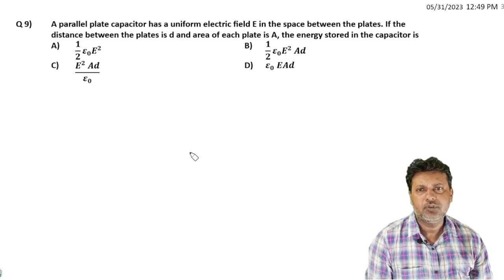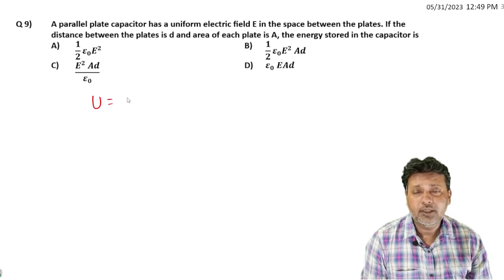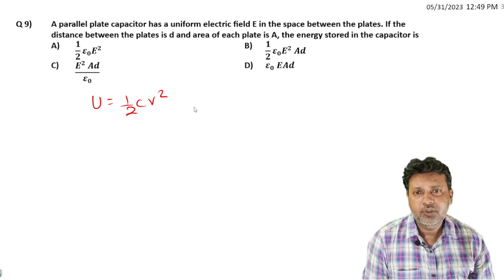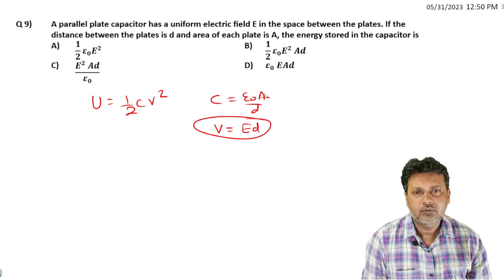The energy stored in the capacitor - we know the general energy formula is one-half CV squared. The capacitance formula for a capacitor is epsilon-not A upon d, and the voltage V equals E into d between the plates.